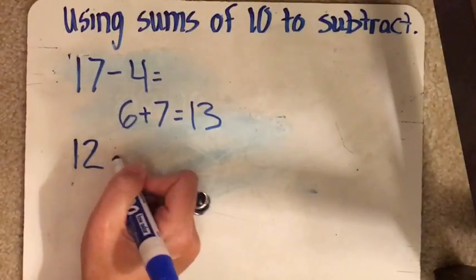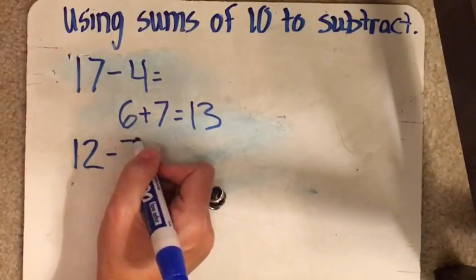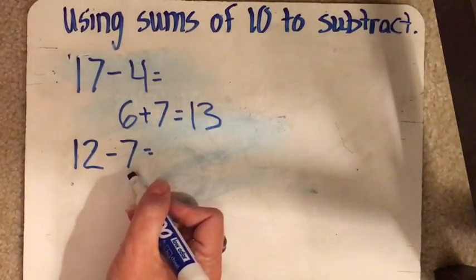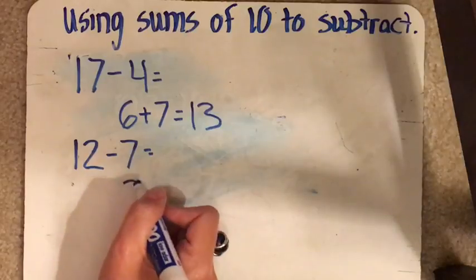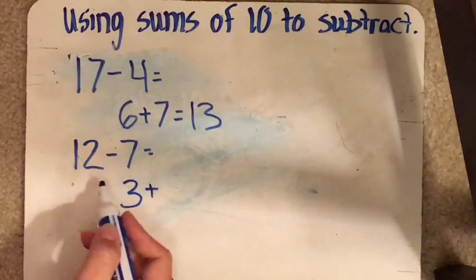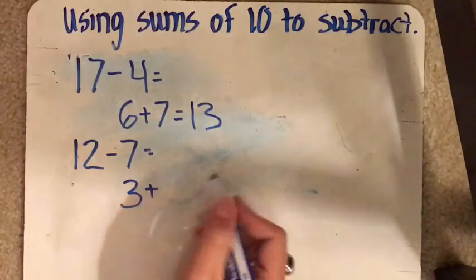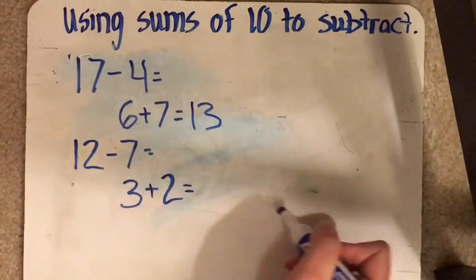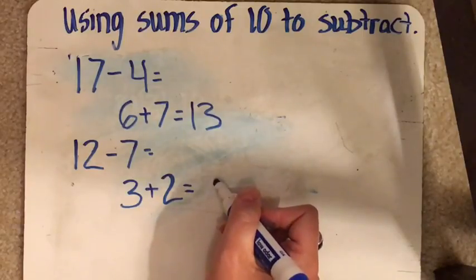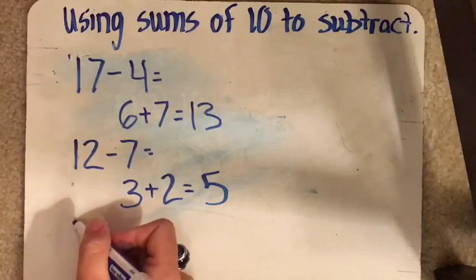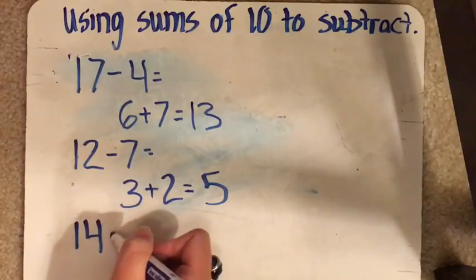And then we have another one. Let's do 12 minus 7. So we're going to say 7 plus 3 gets us to 10. And then we have to add another 2 to that. So 3 plus 2. And that will get us. So we'll do 3 plus 2 equals the answer is 5. And again, once you get to 10, you're really just going to add that 1's place. So it should go pretty quickly here.